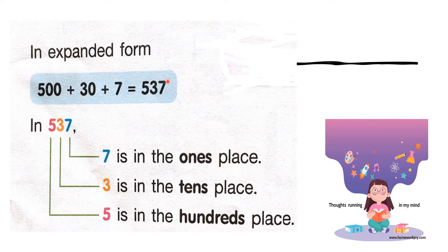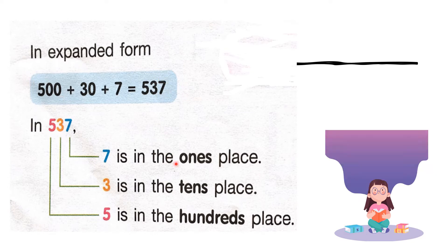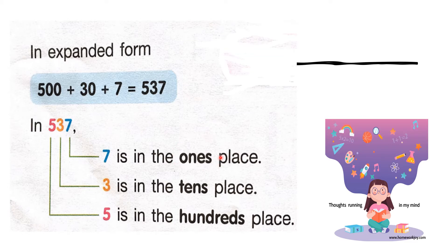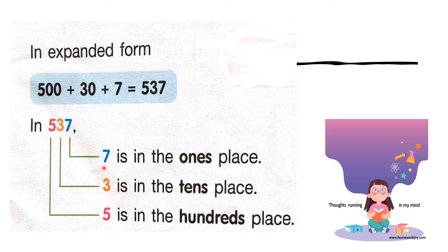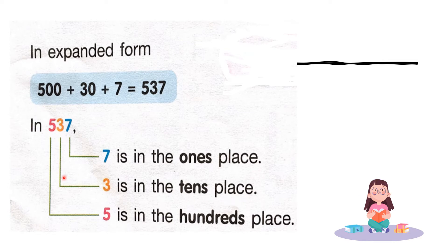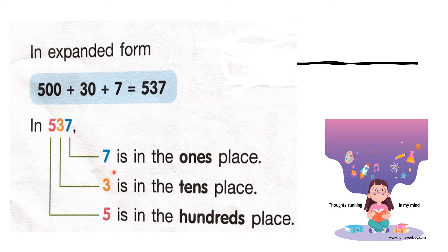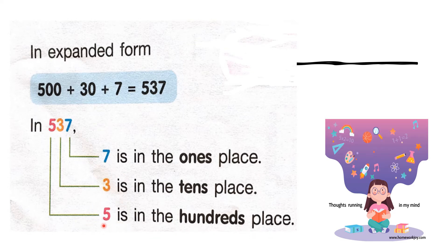Remember the expanded form. Let's move on to place identification. What is the digit in the 1s place? It is 7. In the 10s place, the digit is 3 — colored orange. In the 100s place, the value is 5.